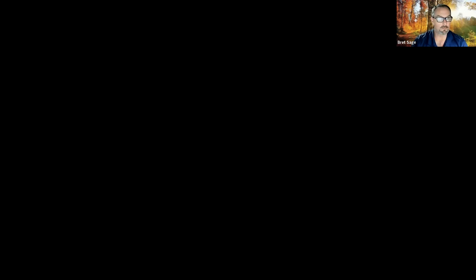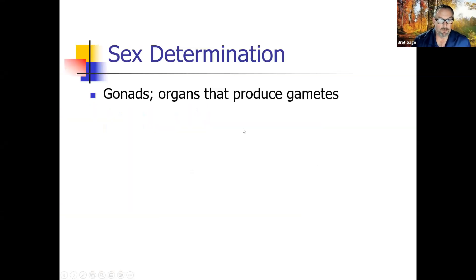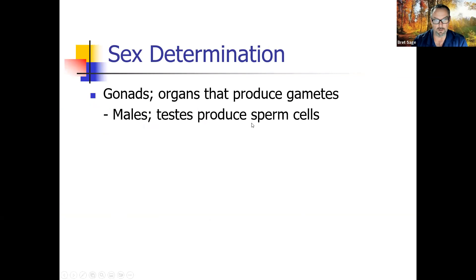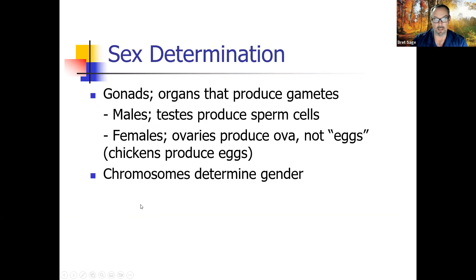Chapter 27. We're talking about reproduction and development. Sex determination — what determines sex or gender? Gonads. It turns out the gonads are not just for men. Gonads incorporate both the testicles and the ovaries. Males produce sperm cells and females produce ova. Eggs is the common term, but it's better to say ova or ovule rather than egg.